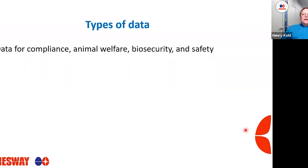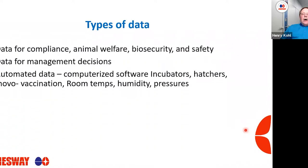There are different types of data. We have data for compliance, animal welfare, biosecurity, and safety. We have data to help us make good management decisions. We also have automated data collection, where computerized software programs capture incubator and hatcher data in real time. In-ovo vaccination equipment often captures computerized data on how many clears you're seeing. If you have equipment to monitor and control room temperatures, humidities, pressures, and plenum pressures, all of that can be controlled automatically and captured for analysis.